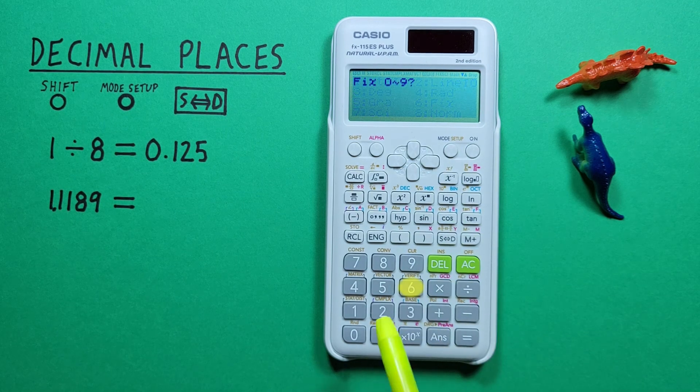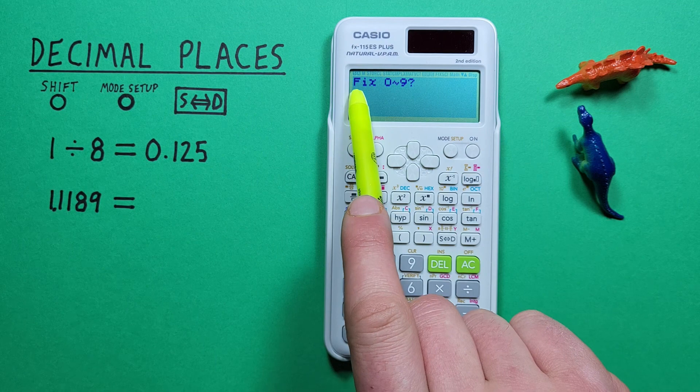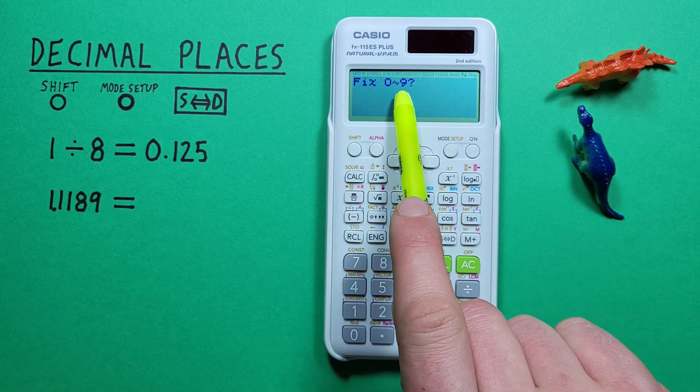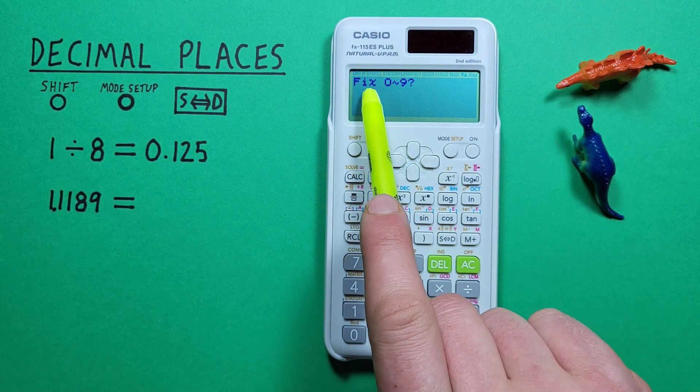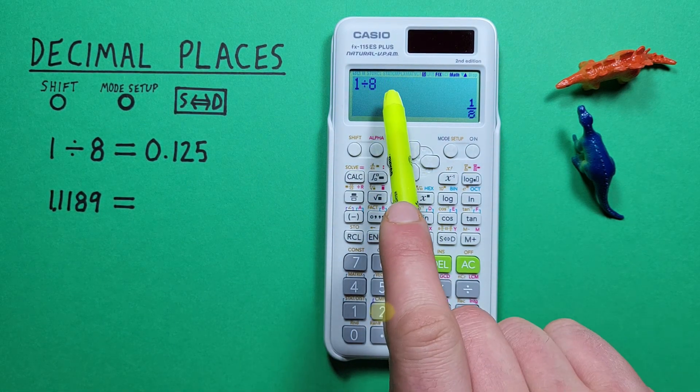So we'll press 6 and that brings us to this menu here where it's asking us how many decimals do we want to round to. Well we wanted to round this to two decimals so we can press 2 and there we go.